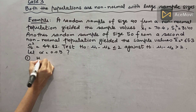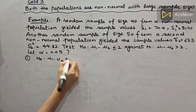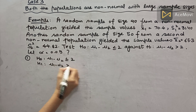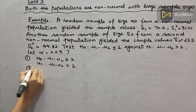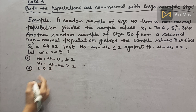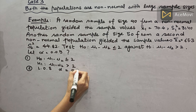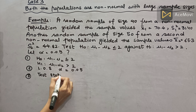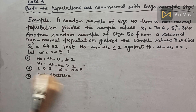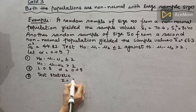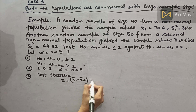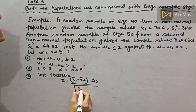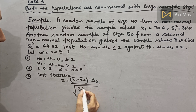Step 1 — State the hypothesis. Step 2 — Level of significance. Step 3 — Test statistic: z equals x-bar1 minus x-bar2 minus delta naught, divided by the square root of s1-squared over n1 plus s2-squared over n2, using sample variance since population standard deviation is unknown.